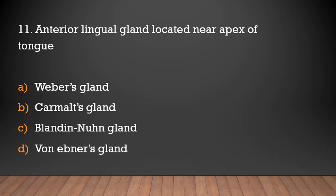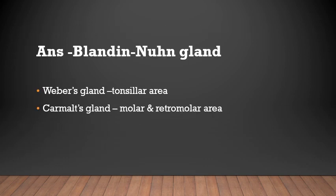Anteriorly located minor salivary gland near the apex of the tongue — is it Weber's gland, Kramer's gland, Blandin-Nuhn glands, or Von Ebner's gland? The answer is Blandin-Nuhn glands. Minor salivary glands in the tonsillar areas are known as Weber's glands, and minor salivary glands of the molar and retromolar areas are known as Kramer's glands.